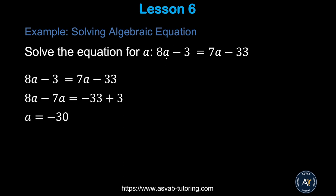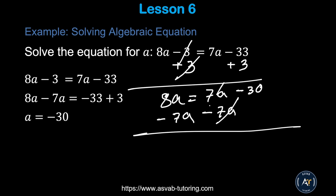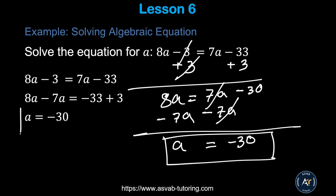Now let's solve different types of algebraic equations. For 8a − 3 = 7a − 33: add 3 to both sides to get 8a = 7a − 30, then subtract 7a from both sides to get a = −30. The goal is to get the variable on one side and the constant on the other.